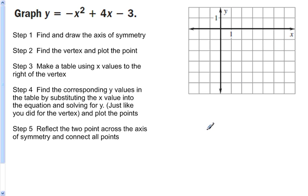Graph y equals negative x squared plus 4x minus 3. This equation is in standard form. We've got five steps for graphing an equation in standard form. The first step is we want to find and draw the axis of symmetry. Now your axis of symmetry has a formula: x equals negative b divided by 2a.